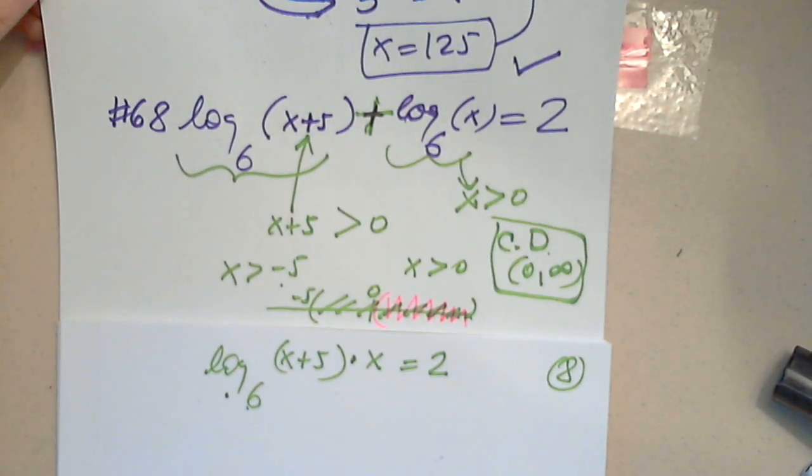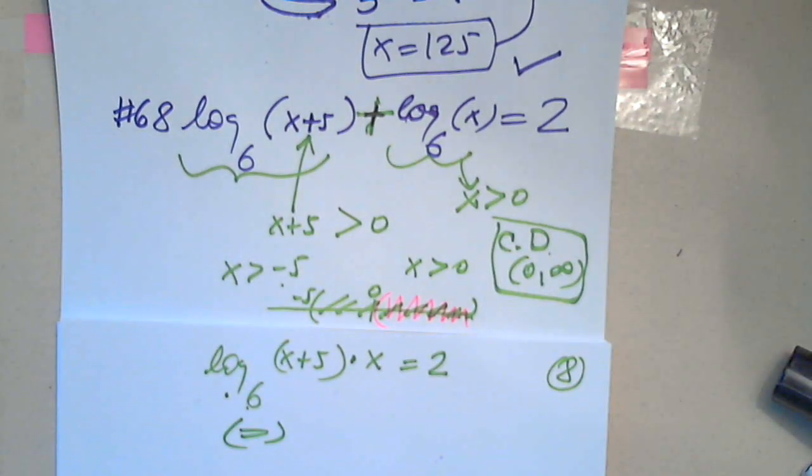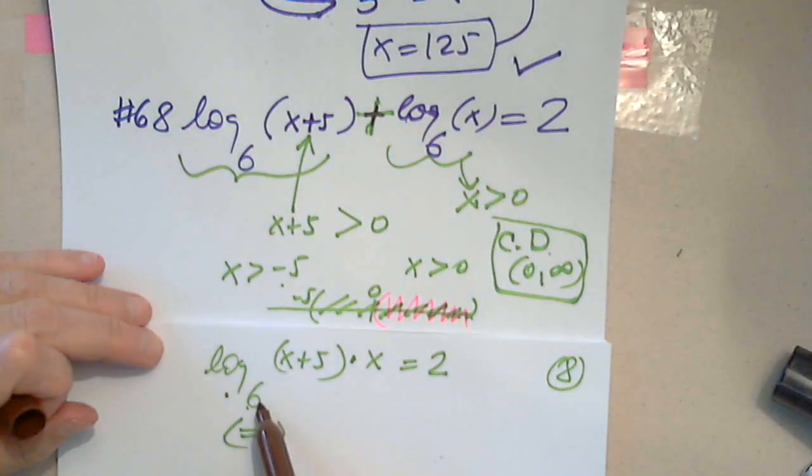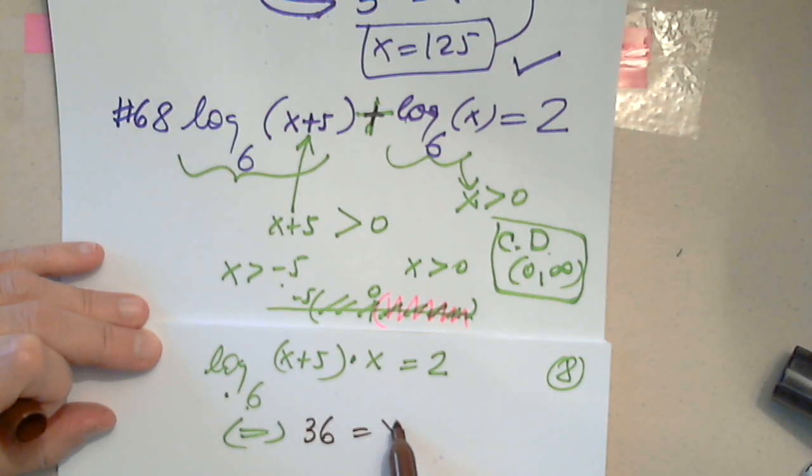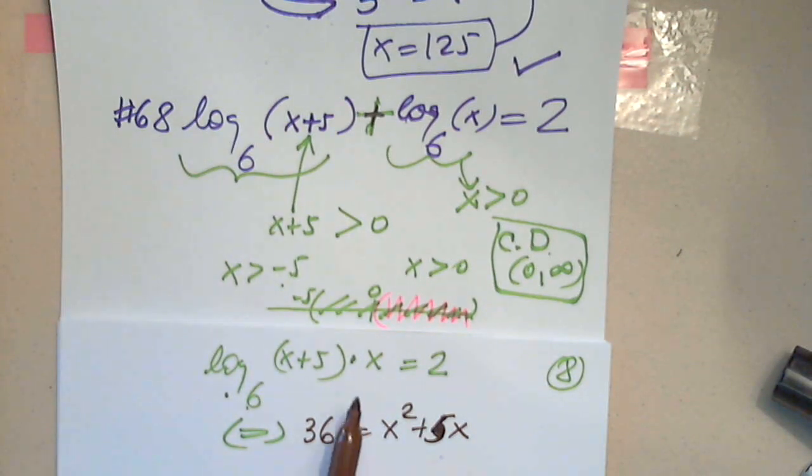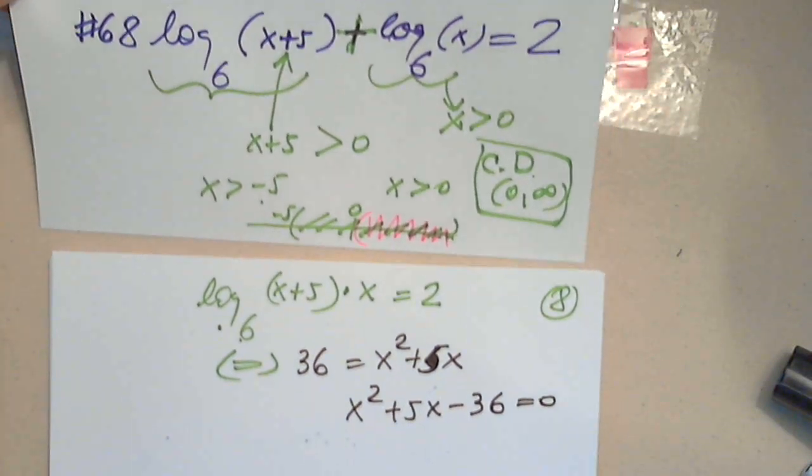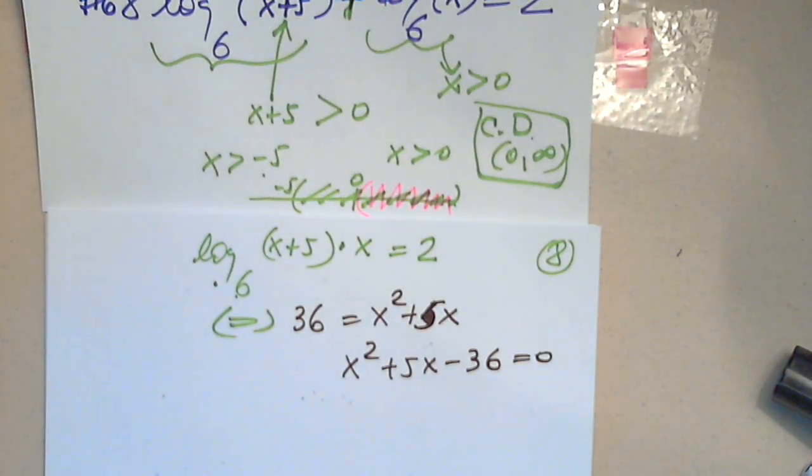And now I will convert it, starting with the base and going counterclockwise. 6 to the second power, which is 36, equals x squared plus 5x. I said 5 and I wrote 6. I distributed and 6 raised to the second power equals this. I know that this is quadratic.